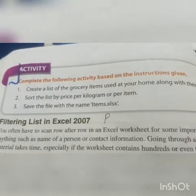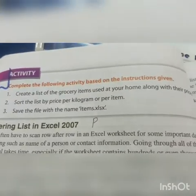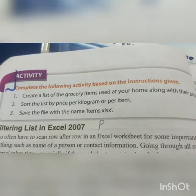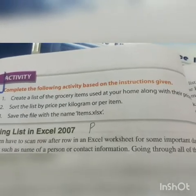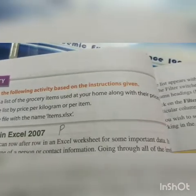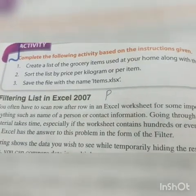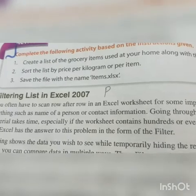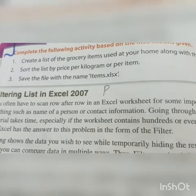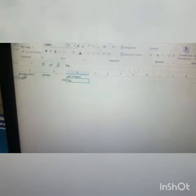On page number 18, you have a small activity that you have to perform. Complete the following activity based on the instructions given below: Create a list of grocery items used at your home along with their prices. Sort the list by price per kilogram or per item. Save the file with the name items.xlsx. As you can see here, I have created three columns — in the first I have written grocery items, in the second the prices, and in the third kilogram or gram.